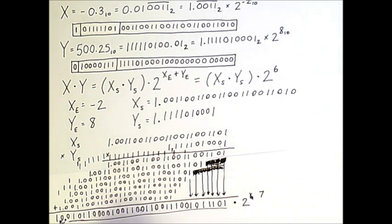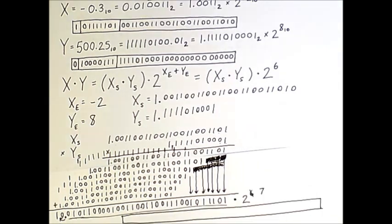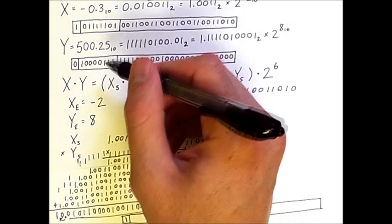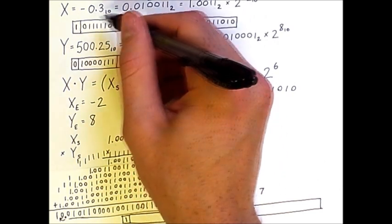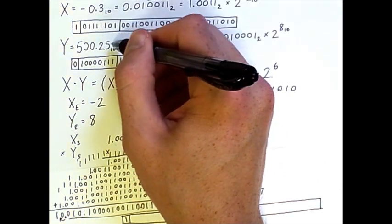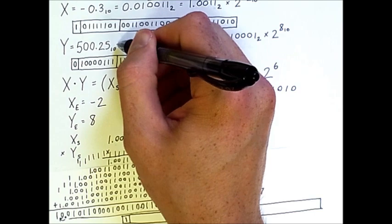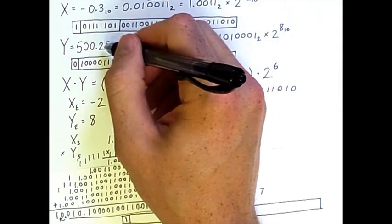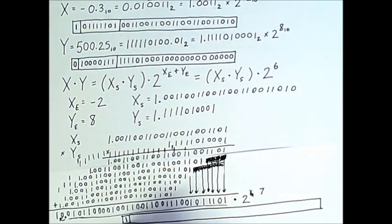Now, given this number, we can figure out the final floating point representation. Our first bit will be a 1 for negative because we are multiplying negative 0.3 by positive 500.25. So a negative times a positive is a negative, therefore a 1 goes here.